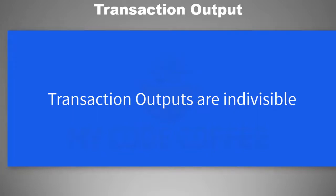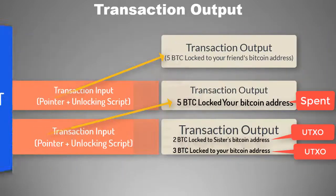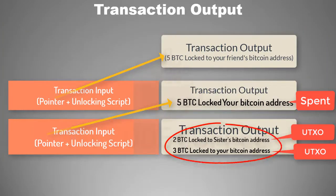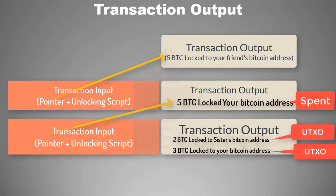When you spend a transaction output, you must spend the entire output. If you only want to spend part of it, you still spend the entire output and transfer the remainder to your own address. This is similar to fiat currency: if you want to give someone two dollars but only have a five dollar bill, you give the entire five dollars and expect three dollars in change. In Bitcoin, the output you create for your own address is similarly called change.